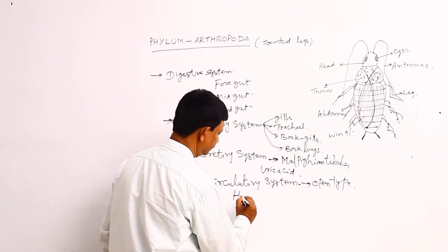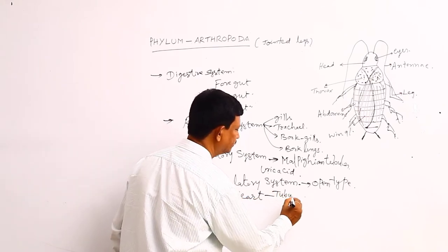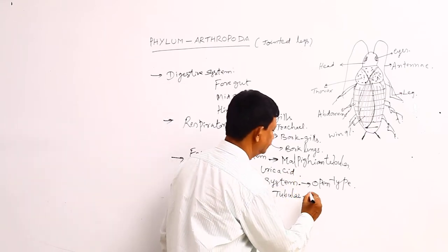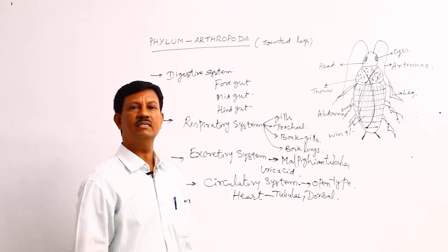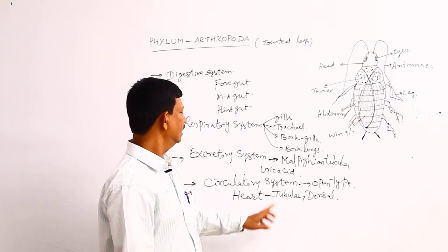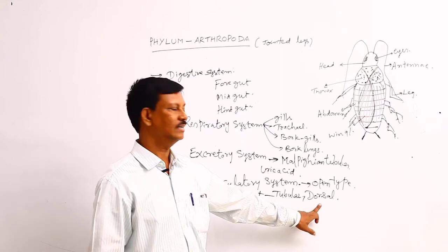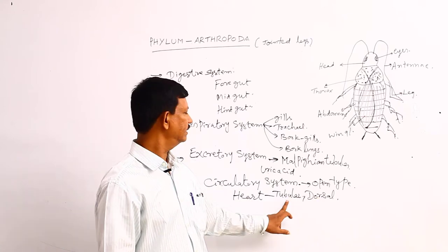The heart is present. It is a tubular heart situated on the dorsal side of the body. For example, in higher animals like human beings and vertebrates, the heart is situated on the ventral side, but in invertebrates it is situated on the dorsal side, and it is tubular.